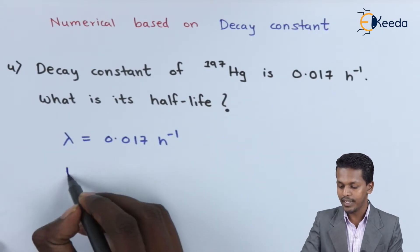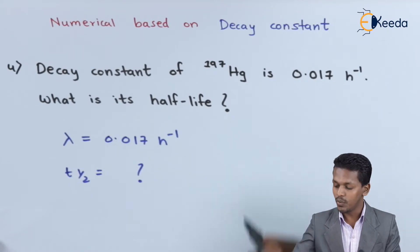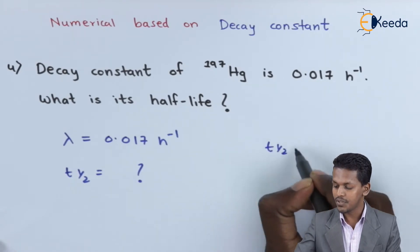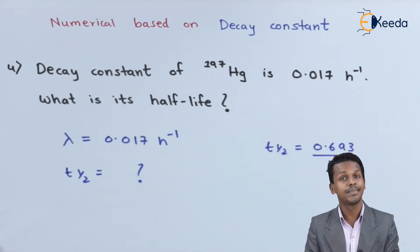The formula that we know is: t half equals 0.693 divided by lambda, the decay constant. So let us find the value by substituting the decay constant.